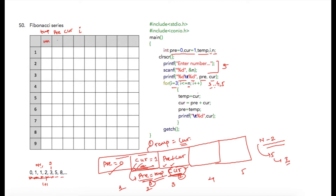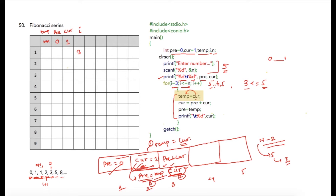My variables are: temp (holding garbage initially), previous holding 0, and current holding 1. Suppose the user has entered 5. We first print previous and current — so 0 and 1 are printed with a tab space between them. Then the for loop starts with i initialized to 3. The condition checks 3 less than or equal to 5 — which is true — so the compiler begins executing the loop block.